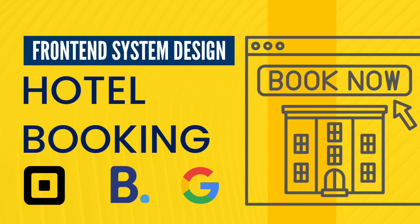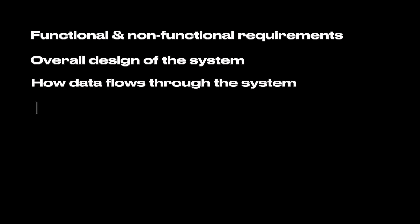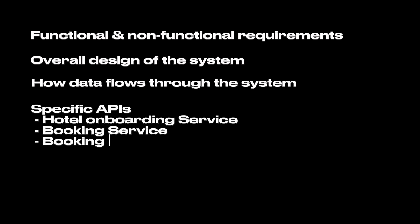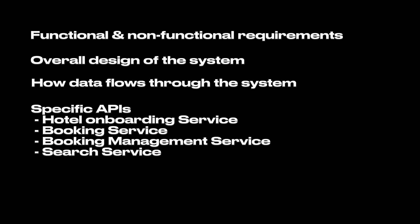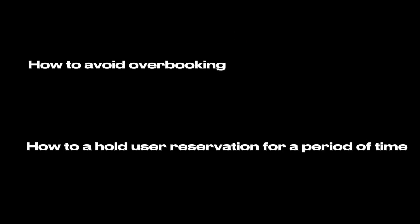Hey everyone, welcome back to Frontend Jirachi. In today's video, we're tackling a commonly seen frontend system design question to design a hotel booking system. We'll start with functional and non-functional requirements, discuss the overall design of the system and how data flows through the system. Then we'll come up with specific APIs for hotel onboarding service, the search service, and the booking service. We'll then talk about the data schema and get into some tips and tricks for frontend optimizations. We'll cover things like how to avoid overbooking and how to hold a user reservation for a certain amount of time. Let's get started.